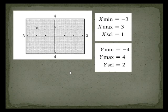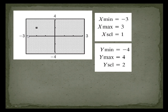Here's another picture of a calculator. The xmin is negative 3 and scaling is 1, so every tick mark is worth 1: 1, 2, 3. For y-min and max, the scaling is 2, so every tick mark is worth 2: 2, 4. Like I said, it's not a good idea to have x and y scaling different — just an example to show.